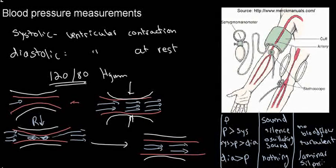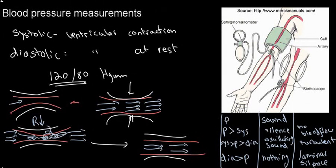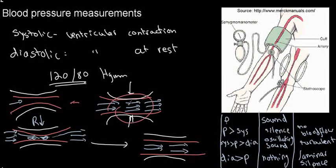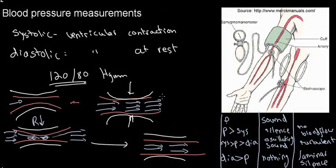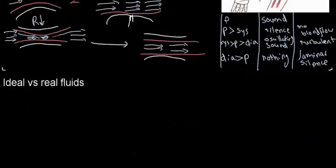Basically, squeezing a laminar flowing fluid through a medium causes turbulence. Now we're going to move on and talk about the differences between ideal and real fluids, covering just the bare essentials needed to answer questions and build intuition.